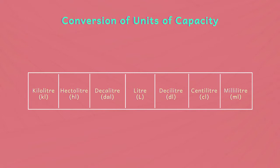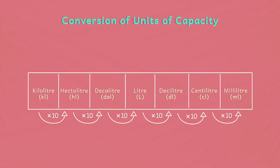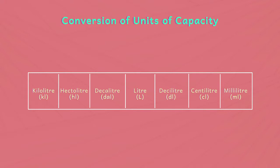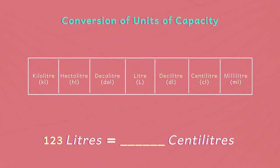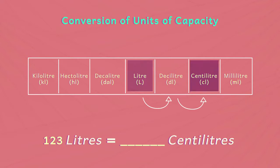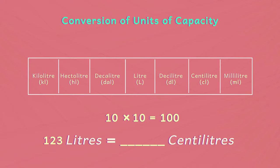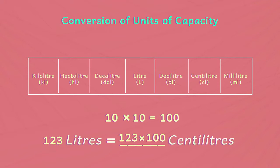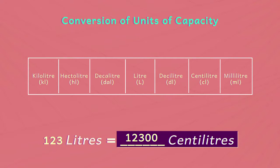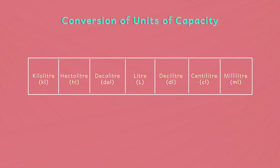Let us learn how to convert a larger unit of capacity to a smaller unit. To convert from larger capacity units to smaller capacity units, we multiply by ten at each step. Let us convert 123 litres to centilitres. Centilitre is two steps to the right of litre, so we multiply by ten at each of the two steps: 10 × 10 = 100. Therefore, 123 litres equals 123 × 100 = 12,300 centilitres.